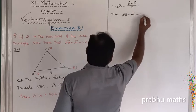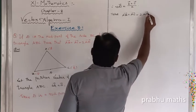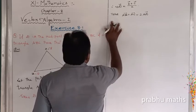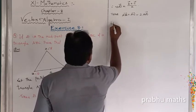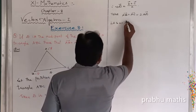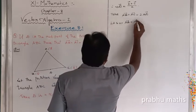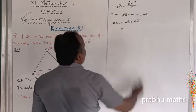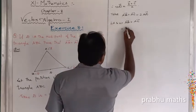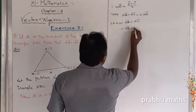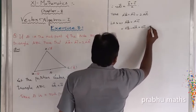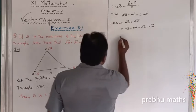Now let us take the given condition. Take LHS, that is AB vector plus AC vector. To find this, we use position vectors: AB vector equals OB vector minus OA vector, and AC vector equals OC vector minus OA vector.